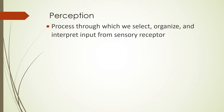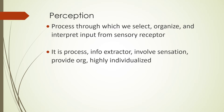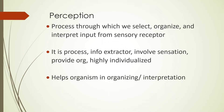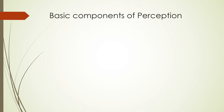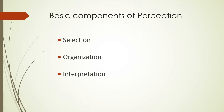Talking about perception — it is the process through which we select, organize, and interpret input from our sensory receptors. It is a process of information extraction which involves sensation, provides organization, and is highly individualized. It helps organisms in organizing and interpreting stimuli, and gives meaning to the responses we receive. The basic components of perception are selection, organization, and interpretation.